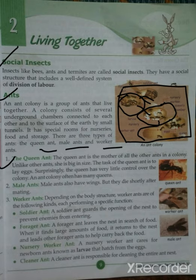The first type is the queen ant. The queen ant is the mother of all other ants in the colony. Unlike other ants, she is big in size. The task of the queen ant is to lay eggs. The queen has very little control over the colony, and an ant colony often has many queens.